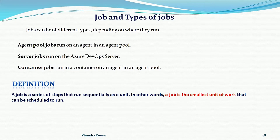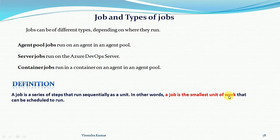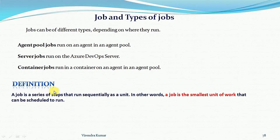Let's understand the definition first about jobs. A job is a series of steps that run sequentially as a unit. In other words, a job is the smallest unit of work. For the actual work, we need to define it in the job sections, and a job can be scheduled to run.